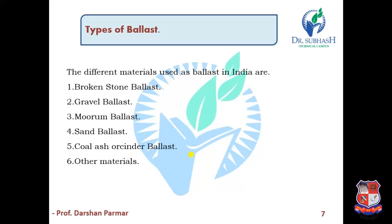The third type is muram ballast. Muram ballast results from different types of decomposition of laterite, forming soft aggregates. Its color is generally red or yellow. The fourth type is sand ballast. Coarse sand is preferred for sand ballast, while fine sand is less suitable.